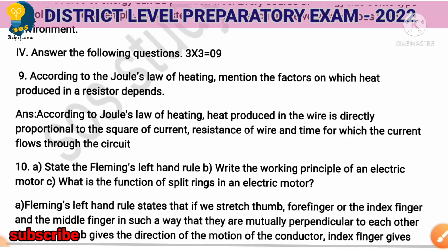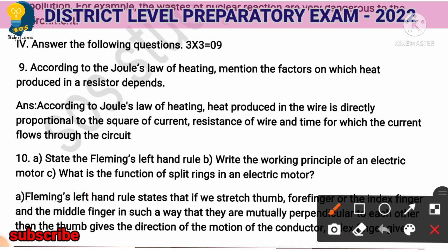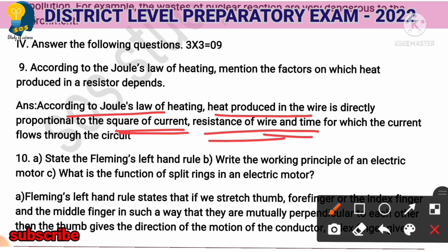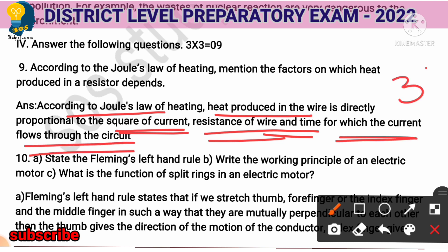Next three-mark question: According to Joule's law of heating, mention the factors on which heat produced in a resistor depends. According to Joule's law of heating, heat produced in a wire is directly proportional to: first, the square of current — 1 mark; second, the resistance of the wire — 1 mark; and third, the time for which the current flows through the circuit — 1 mark. Writing these three factors will earn you 3 marks.